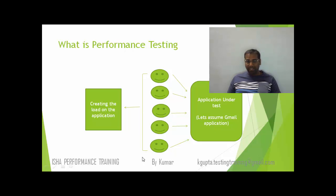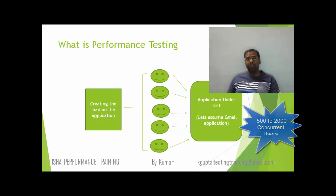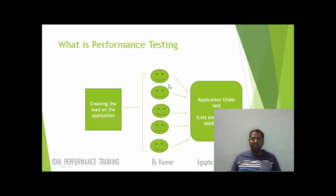In our example, we are creating the load of five users, but in real-time applications this number is usually huge. On a moderate performance testing project you might have 500 to 1000 users, or in a big performance testing project you might have even 1500 or 2000 users. Typically 500 to 1000 is normal, but here I consider only five users. Whether you're using five, 50, or 500 users, you are creating the load on the application.